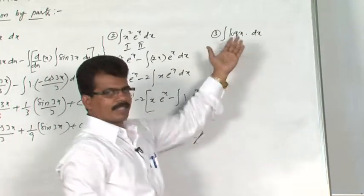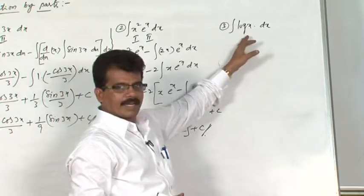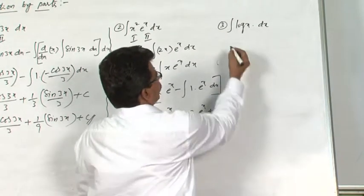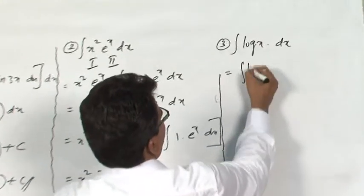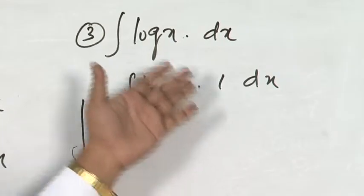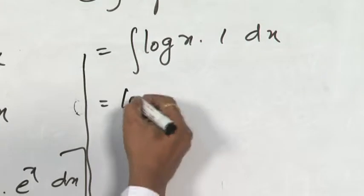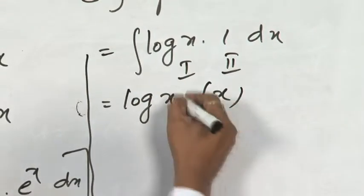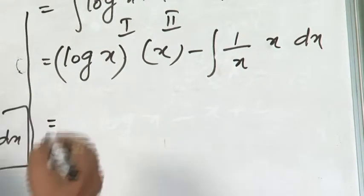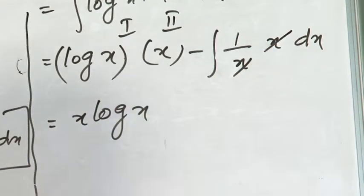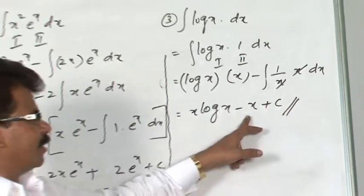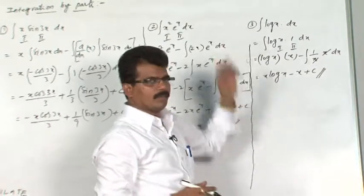See the third question: ∫log x dx. The solution of this integrand can also be used as a formula. Here there is no second function, so we take second function as 1 — that is ∫log x · 1 dx. First function is log x, integral of second function is x. So we get x·log x − ∫(1/x)·x dx = x·log x − ∫1 dx = x·log x − x + C. This can be used as a formula for the integration of log x.